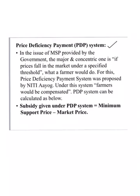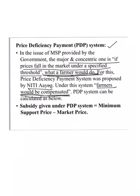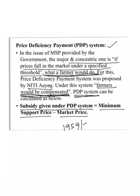Now, what is the Price Deficiency Payment System? Under MSP, a major concern is: if prices fall in the market under a specified threshold, what would a farmer do? For this, PDP was proposed by NITI Aayog. Under this system, farmers would be compensated when market prices fall below MSP. The subsidy under PDP equals: Minimum Support Price minus Market Price.